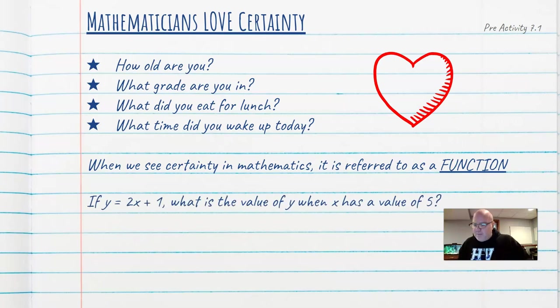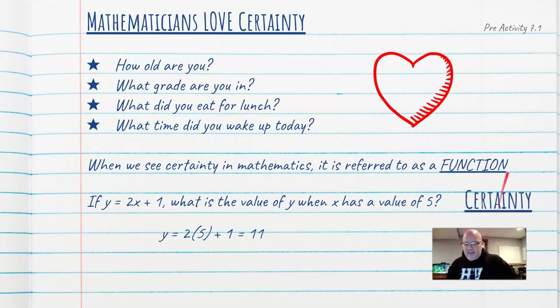If I have this particular question, if y equals 2x plus 1, what is the value of y when x has a value of 5? Well, I can find that very easily. y equals 2 times 5 plus 1, which is equal to 11. Am I certain that the answer is 11? The answer is yes. I am completely and 100% certain that the answer is 11.